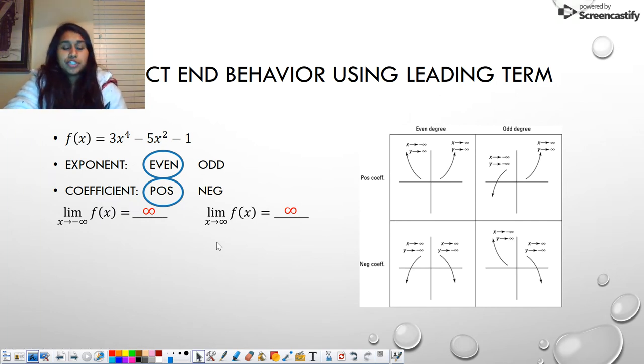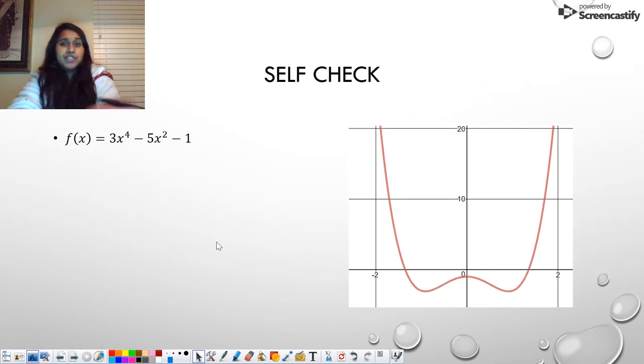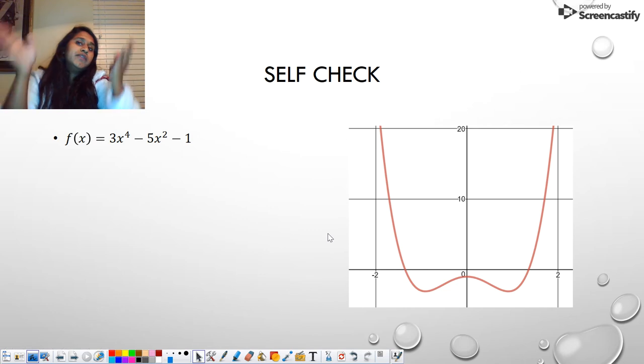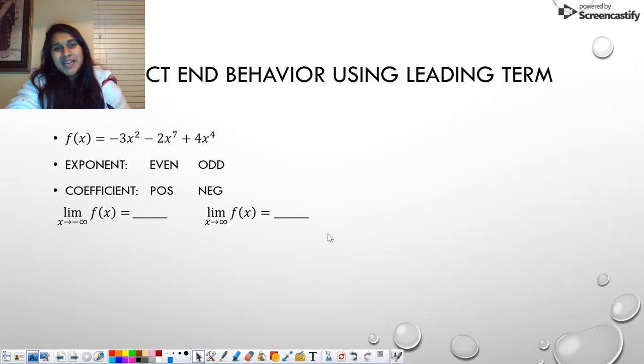Also a self-check. This is the actual polynomial graph. So you have an opportunity to say, oh yeah, even positive. You see both arms going up.